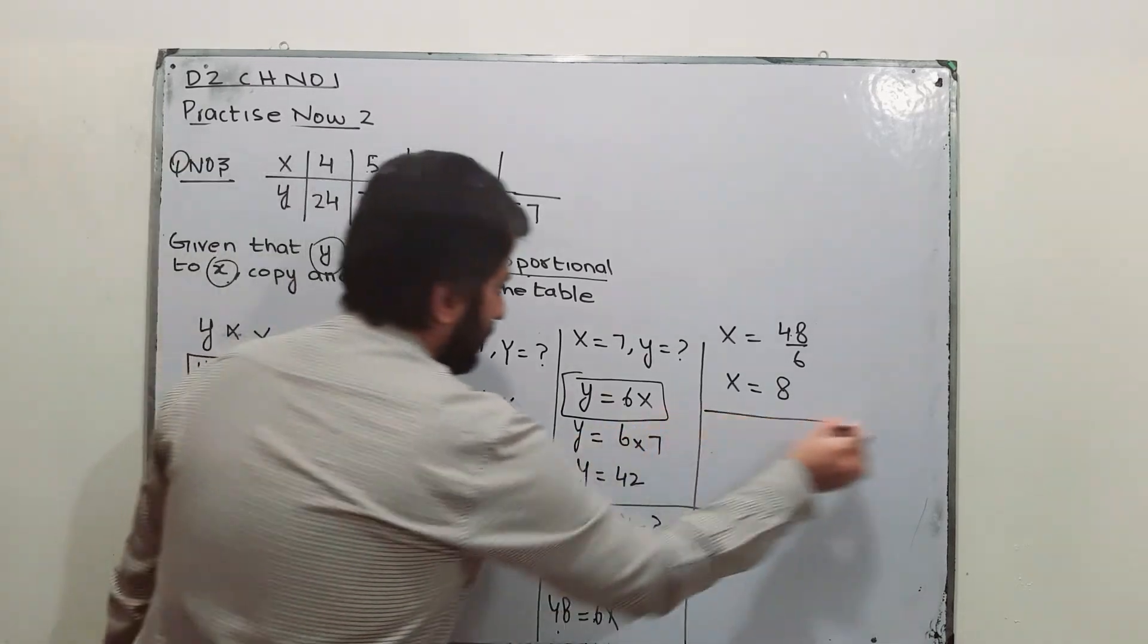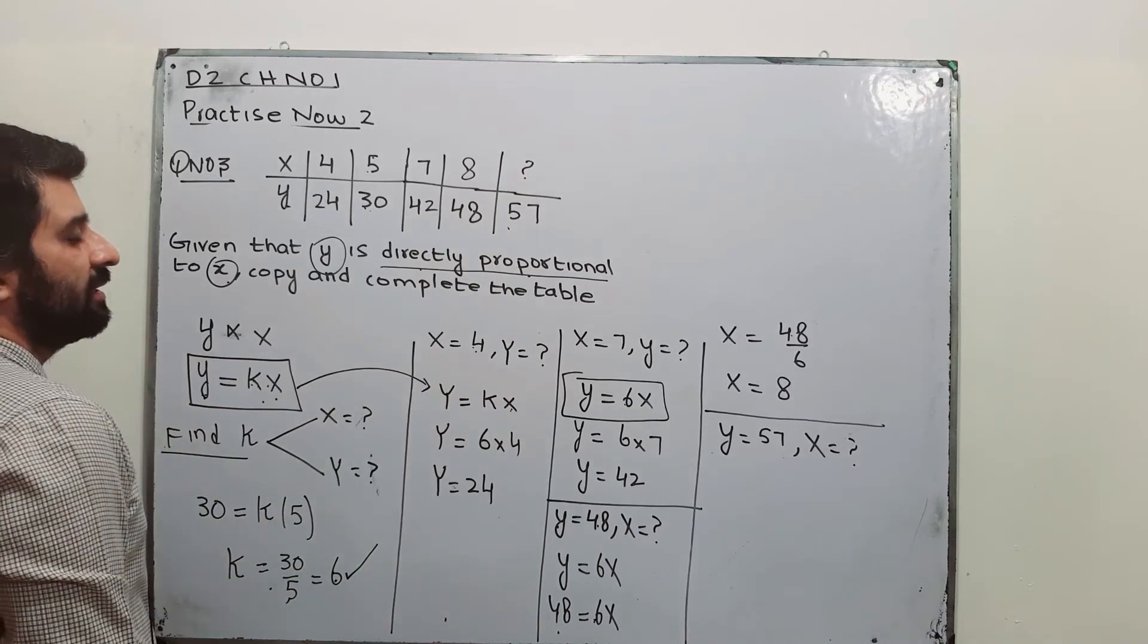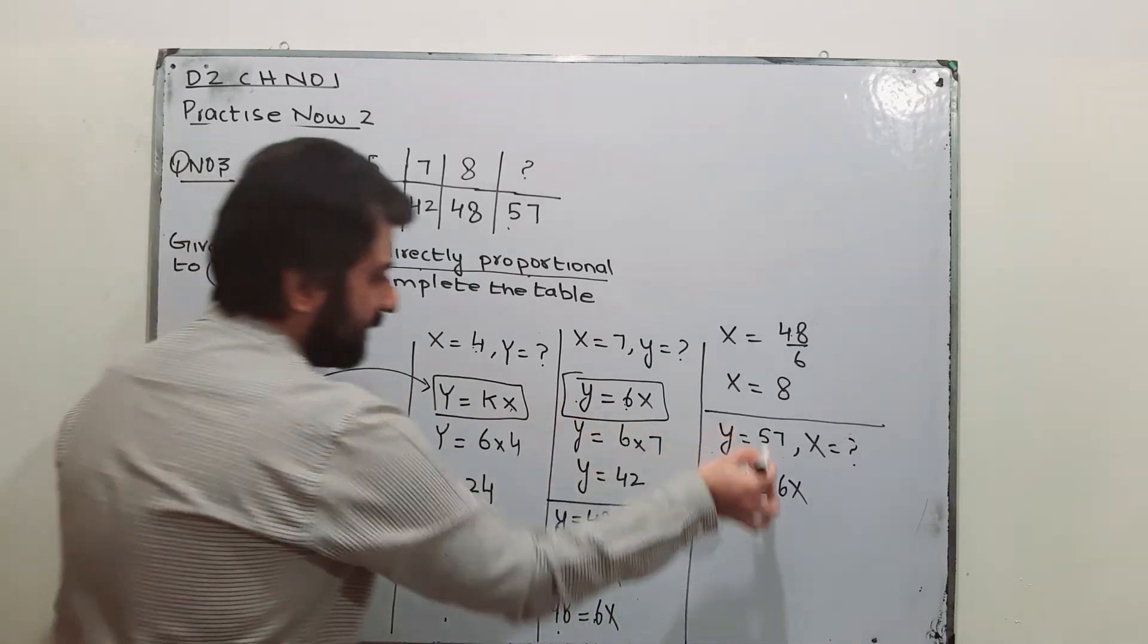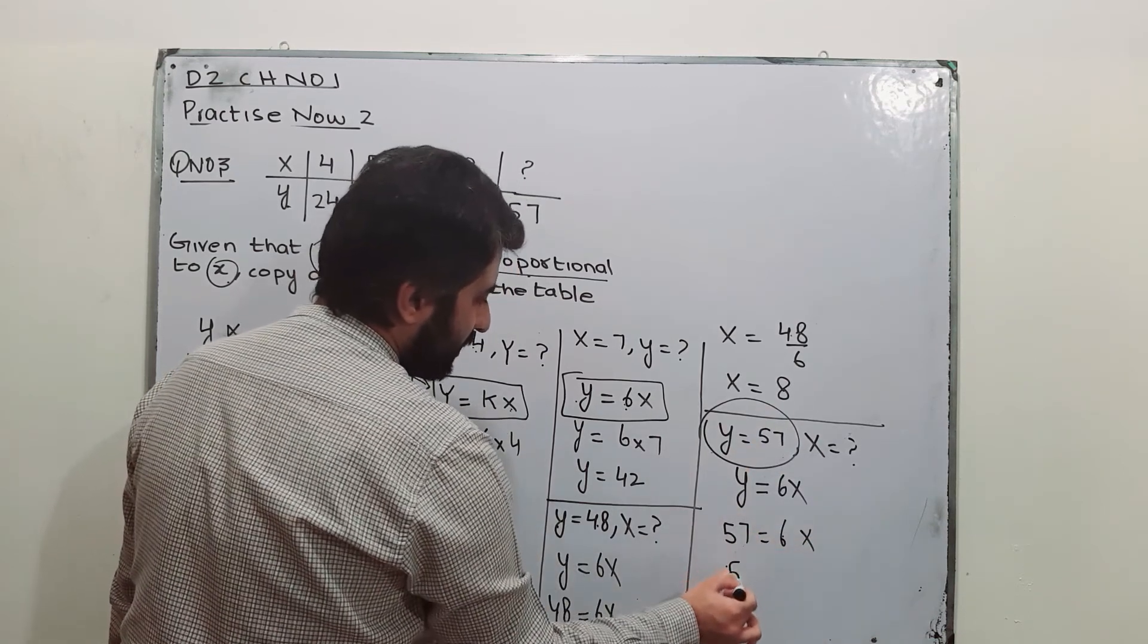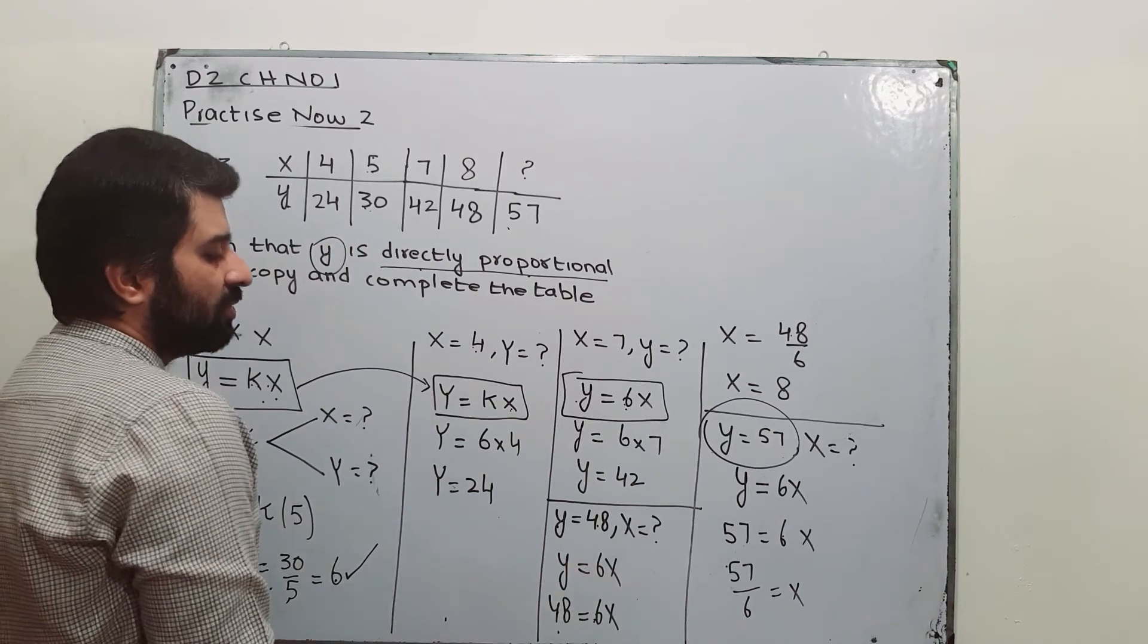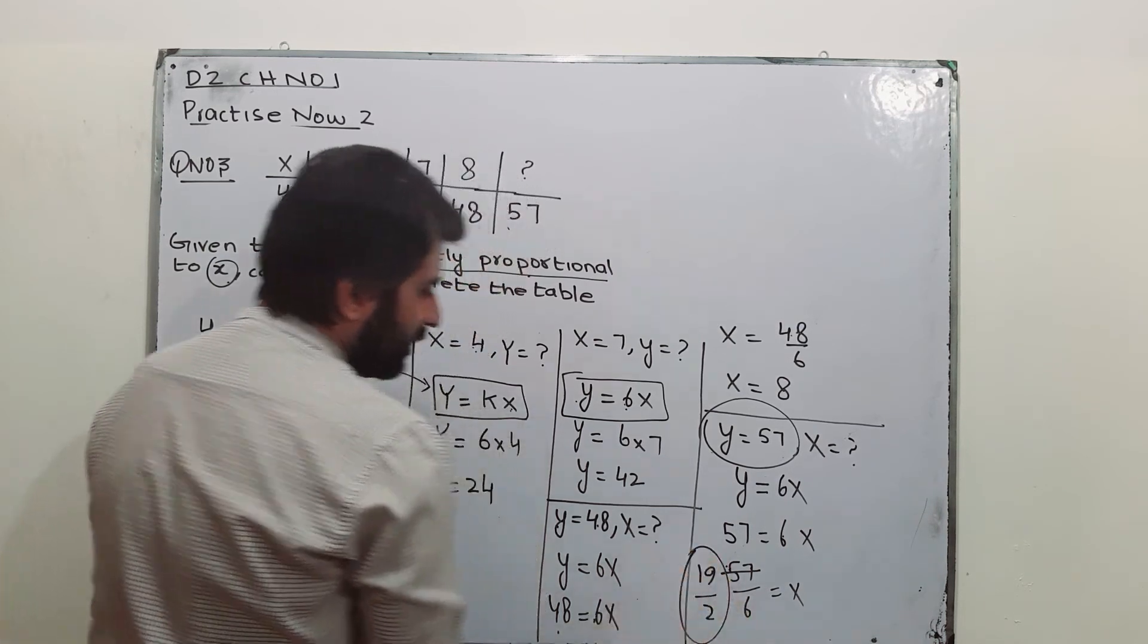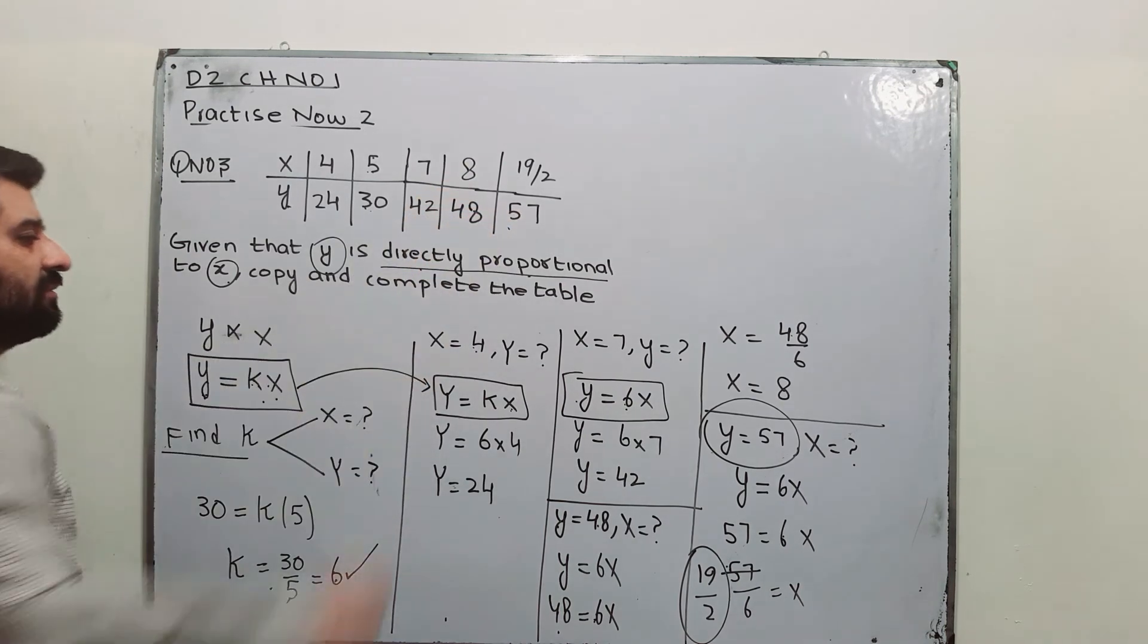And lastly when Y is 57 you can find X. Y is equal to K which is 6. Y is 57, 57 equals 6 into X. Divide, 57 over 6 is equal to X. Simplify, 19 over 2 is your answer for this one. X is 19 over 2 when Y is 57.